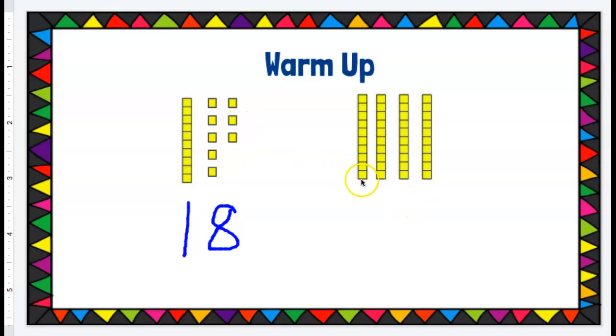Here I only have longs. I have one, two, three, four longs. Each long is worth 10, which means 10, 20, 30, 40, or you could say four longs and no cubes.